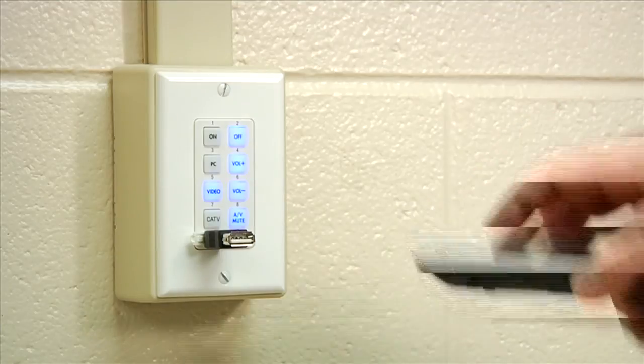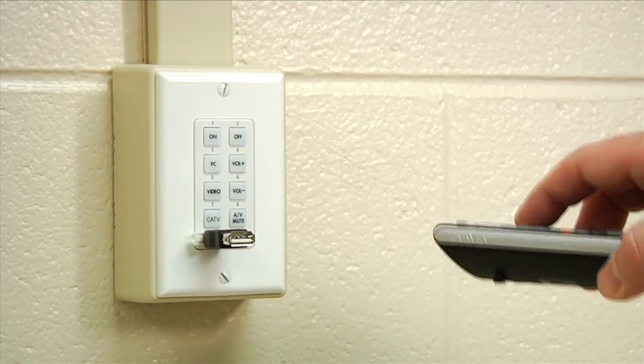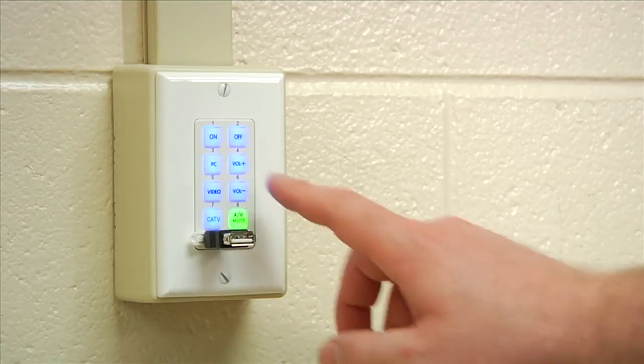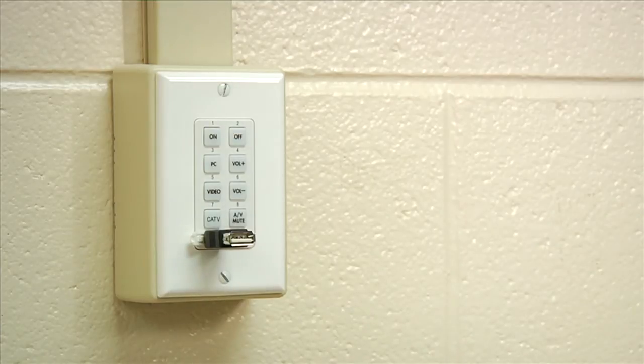When the command is learned, the controller will beep once and the top button in the opposite column of the button being programmed will stop blinking, indicating that the code has been successfully learned. You would have to repeat this for each button that you would need to program through the IR learning mode.